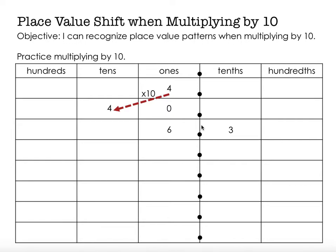I want to take 6 and 3 tenths and make that number 10 times bigger, so I have to make each of these parts 10 times bigger. I'm going to make the 6 ten times bigger by moving it to the tens place, and 3 tenths ten times bigger by moving it to the ones place. So 6 ones becomes 6 tens, and 3 tenths becomes 3 ones. So 6 and 3 tenths, when made 10 times bigger, becomes 63. You might want to put something in the tenths place since you had something there before — we have 0 tenths. You can put that there if you want, but it's not necessary, so I'll remove it.